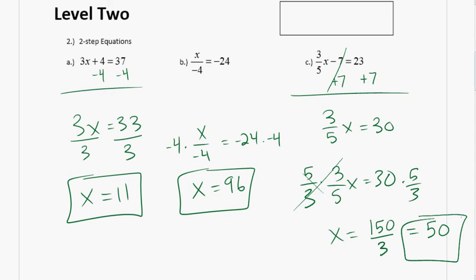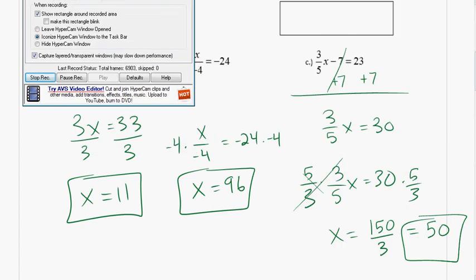So, we're multiplying each side by the reciprocal, which is 5 over 3. There it is.